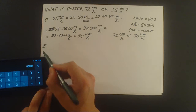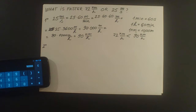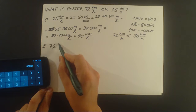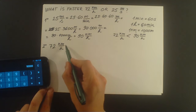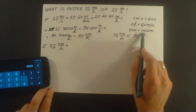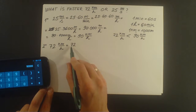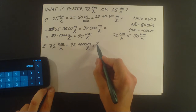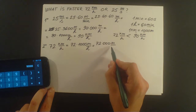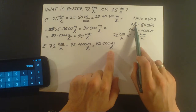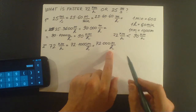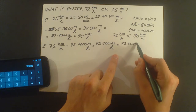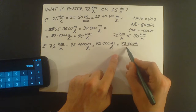The second solution is to do the calculation in the opposite direction — to convert 72 kilometers per hour into meters per second. We know that one kilometer has 1,000 meters, so we write 72 times 1,000 meters per hour, which is 72,000 meters per hour. Then, since one hour has 60 minutes, we write 72,000 meters per 60 minutes.